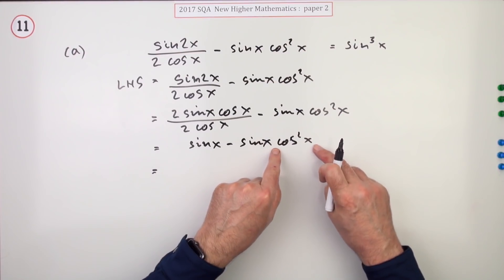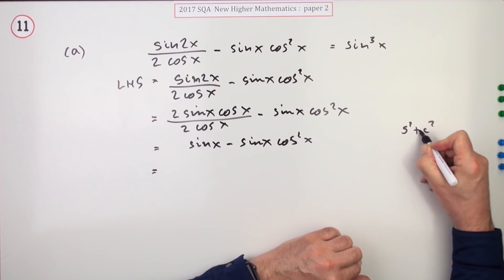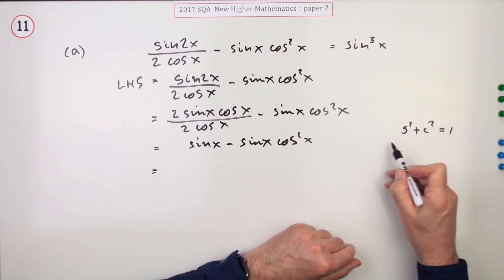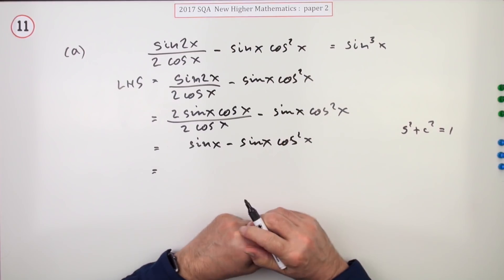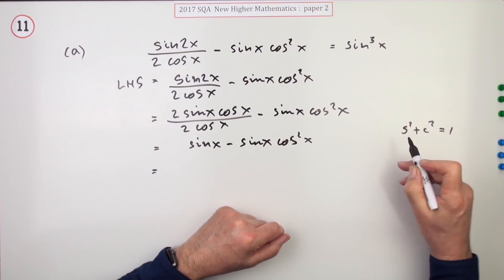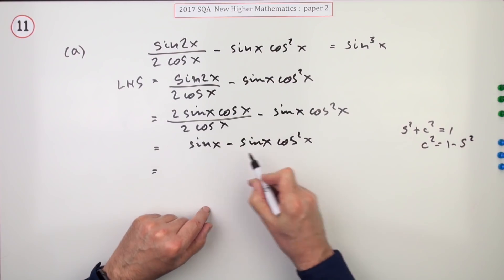Now there's two routes here. You could now remove that cos squared because you know sine squared plus cos squared equals 1. That's usually the abbreviation you just write for your own purposes: s for sine and c for cos. So I could replace that with 1 minus sine squared.